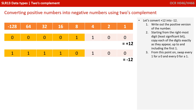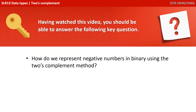In a video coming up in this series, we're going to show you how to add two binary numbers together. Once you've watched that video, you'll be able to prove that what's on screen is correct — because if you add plus 12 to minus 12 you should end up with 0, and indeed if you perform addition on these two numbers you will end up with a row of eight zeros. Give that a go once you've watched the video. Having watched this video, you should be able to answer the key question: how do we represent negative numbers in binary using the 2's complement method?